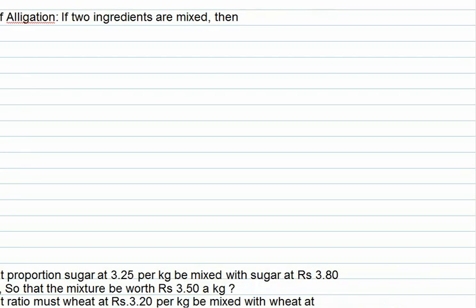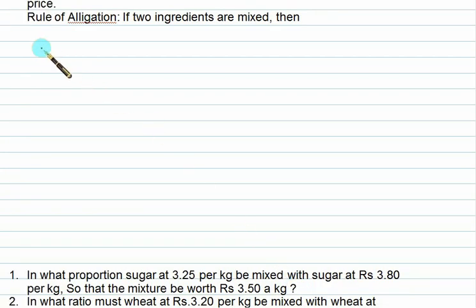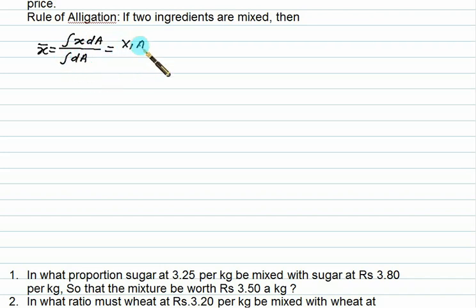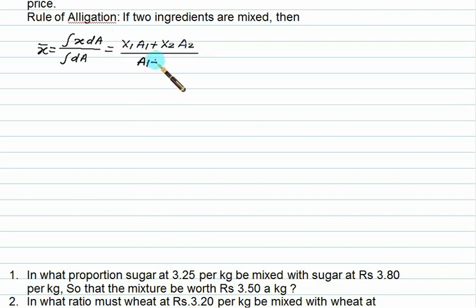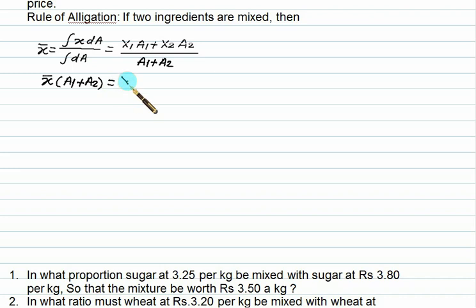You have the mean value theorem. Do you know the centred formula? The centred formula is: x bar equals the integral of x dA upon integral dA, which is the same as x1·a1 plus x2·a2 upon a1 plus a2. So we have x bar into a1 plus a2 is the same as x1·a1 plus x2·a2.